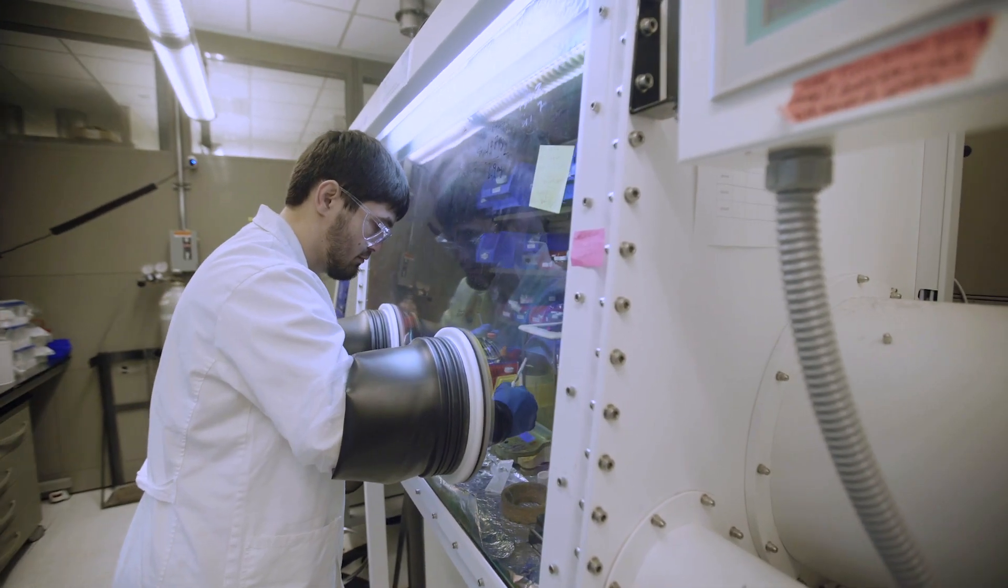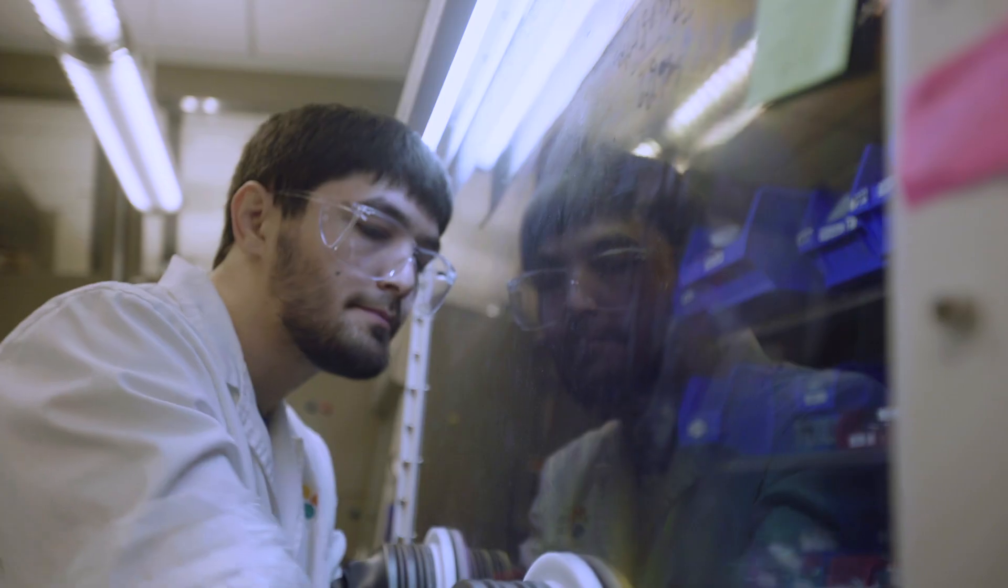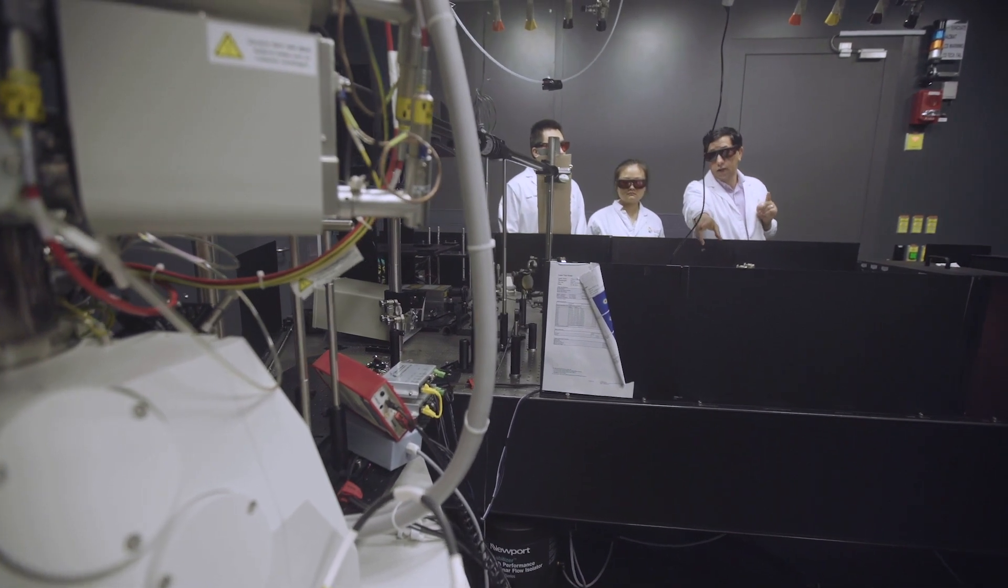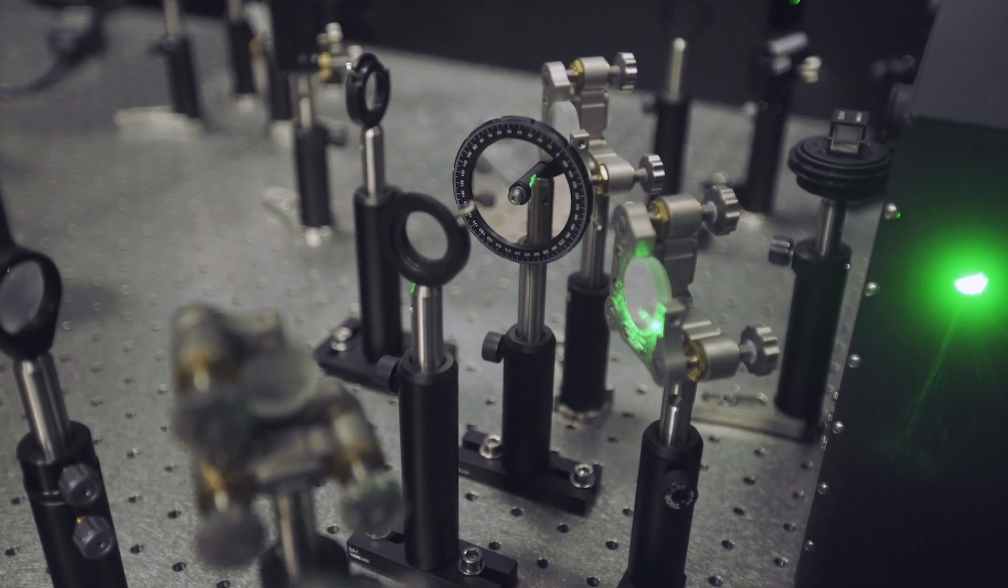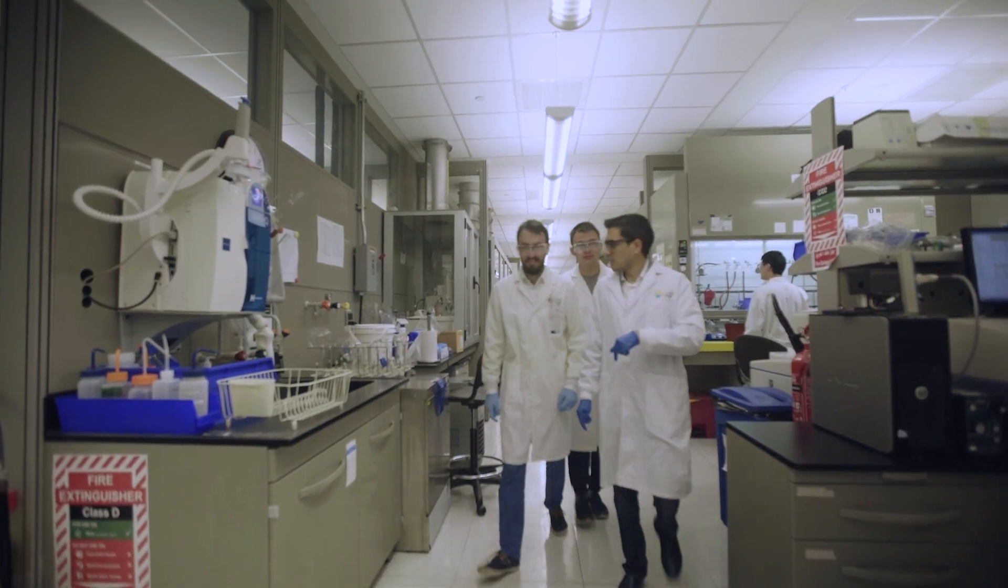KAUST is unique in that it has a wide range of core facilities. These are facilities that can be shared by many faculty. They have a really advanced electron microscopy facility that allows us to image materials at the atomic scale and understand the composition and structure.